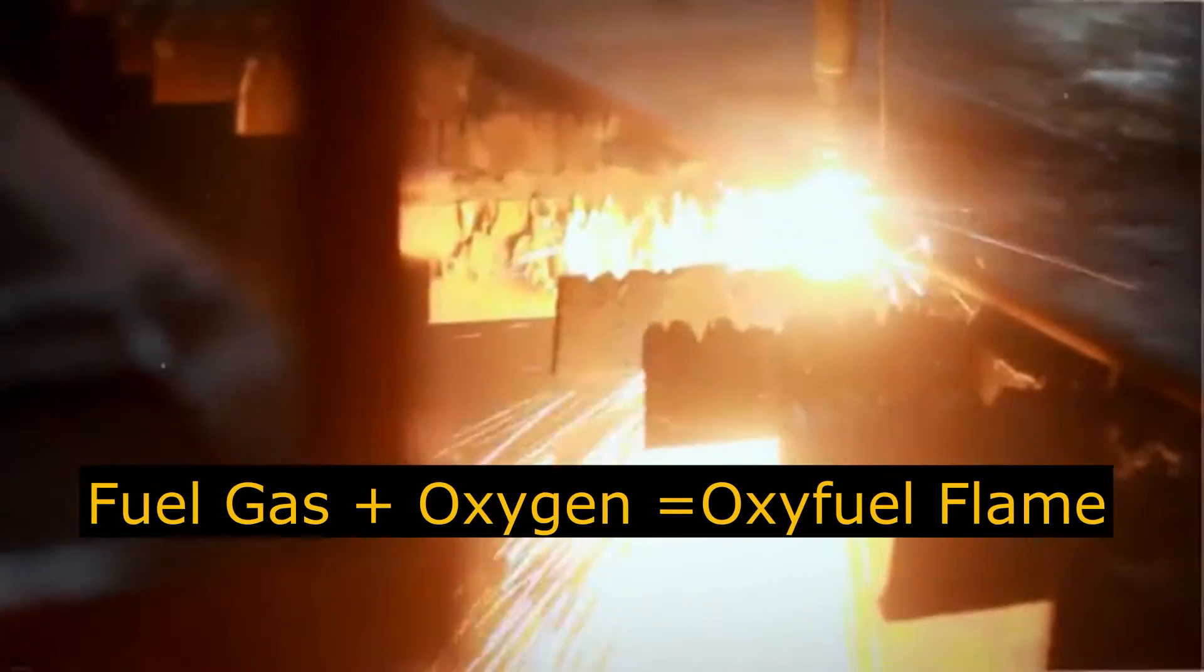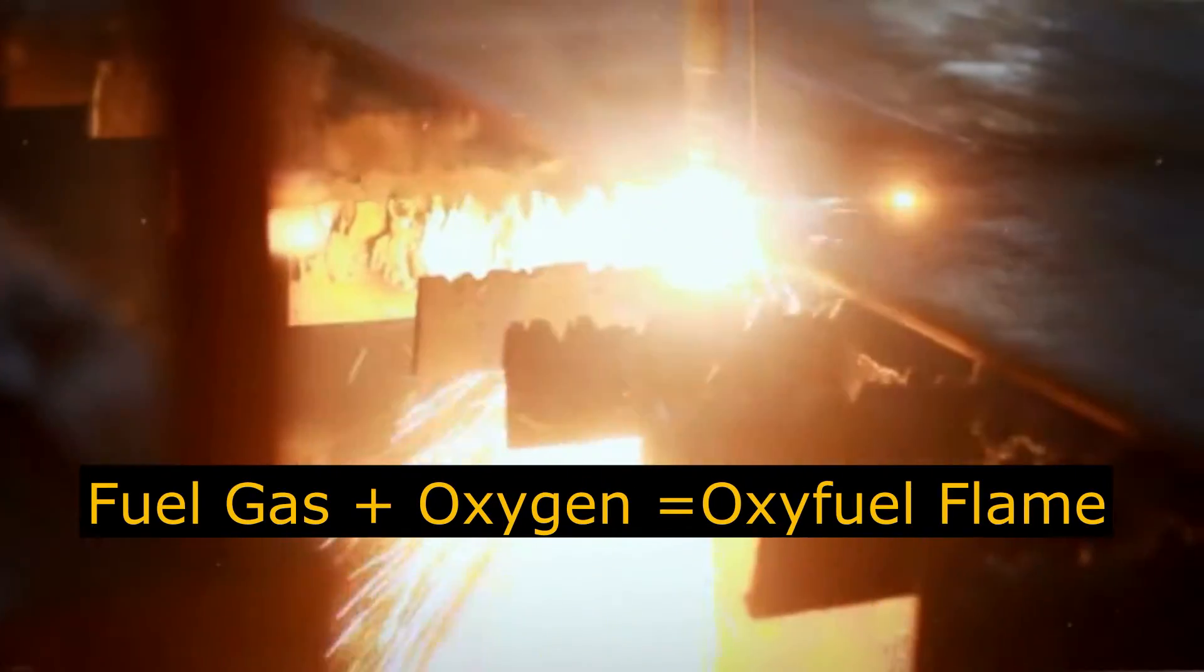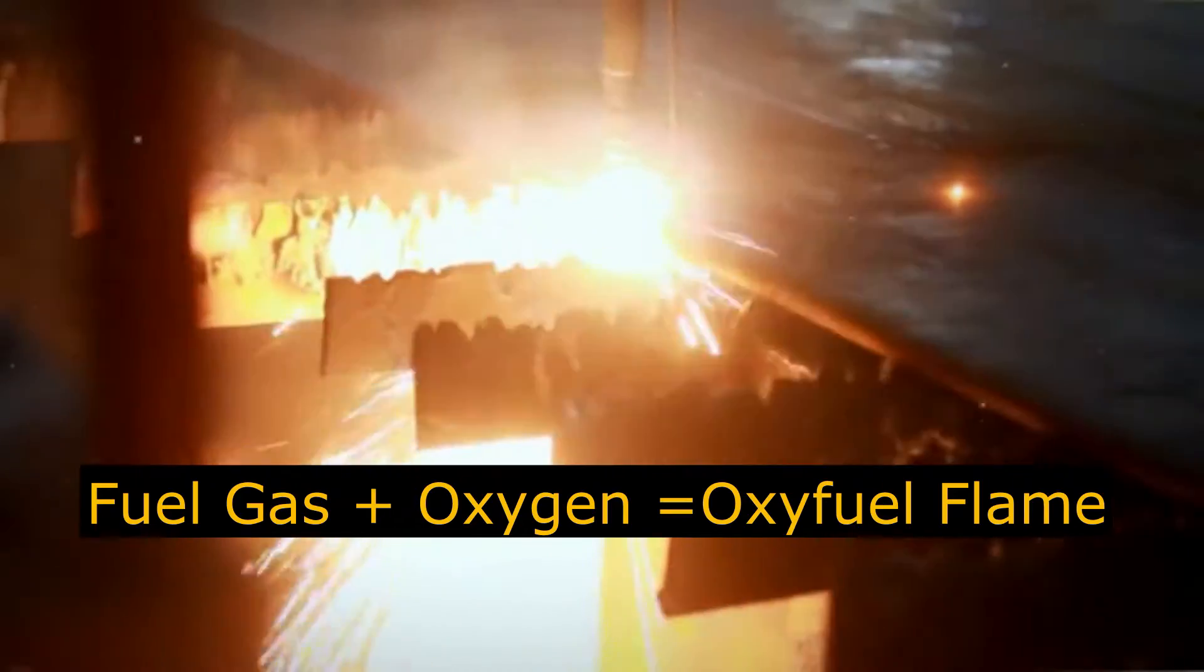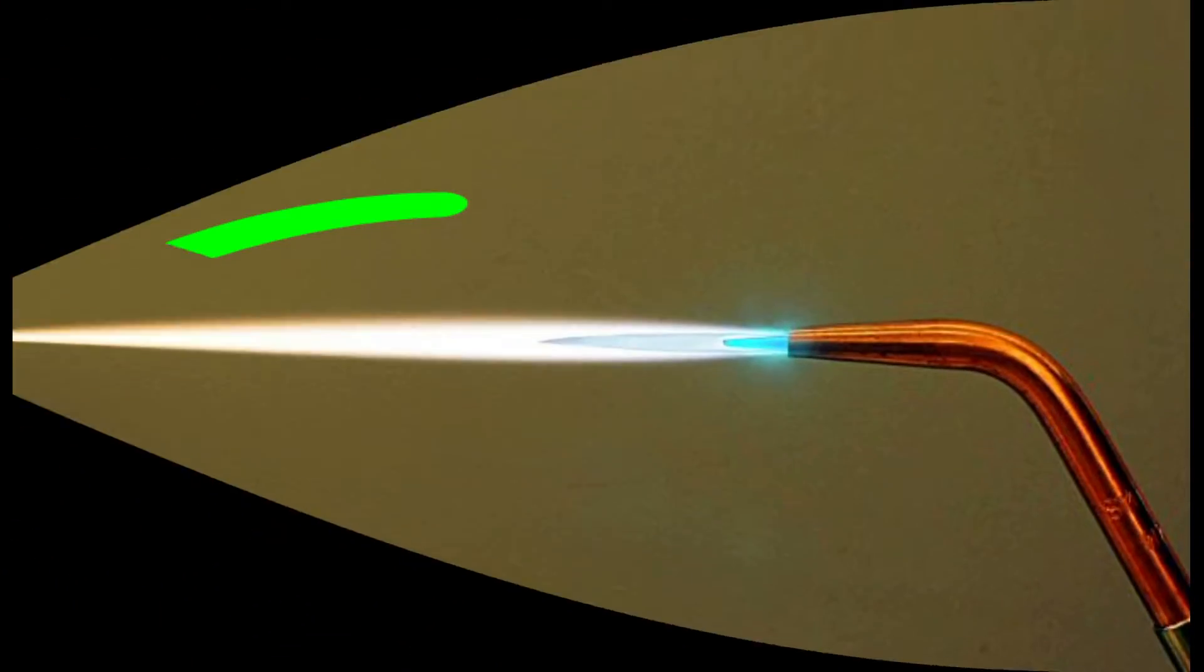Oxy-acetylene flame results from ignition of the gas mixture which flows out of the torch nozzle. The flame is composed of the flame cone and the outer flame.